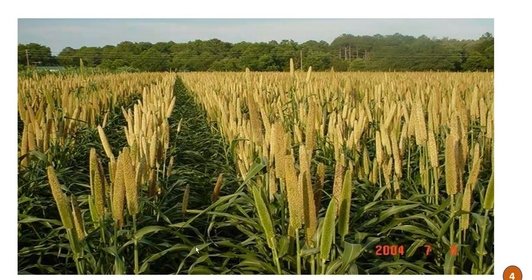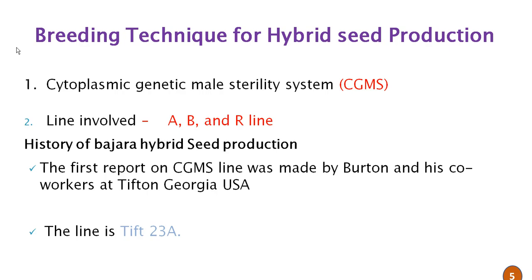Here is the field view of hybrid seed production of pearl millet. The breeding technique for hybrid seed production: hybrid seed production in pearl millet is done using the cytoplasmic genetic male sterility system, known as CGMS or the three-line system, in which A, B and R lines are used. The A line is used as the female and the R line is used as the male line in hybrid seed production.